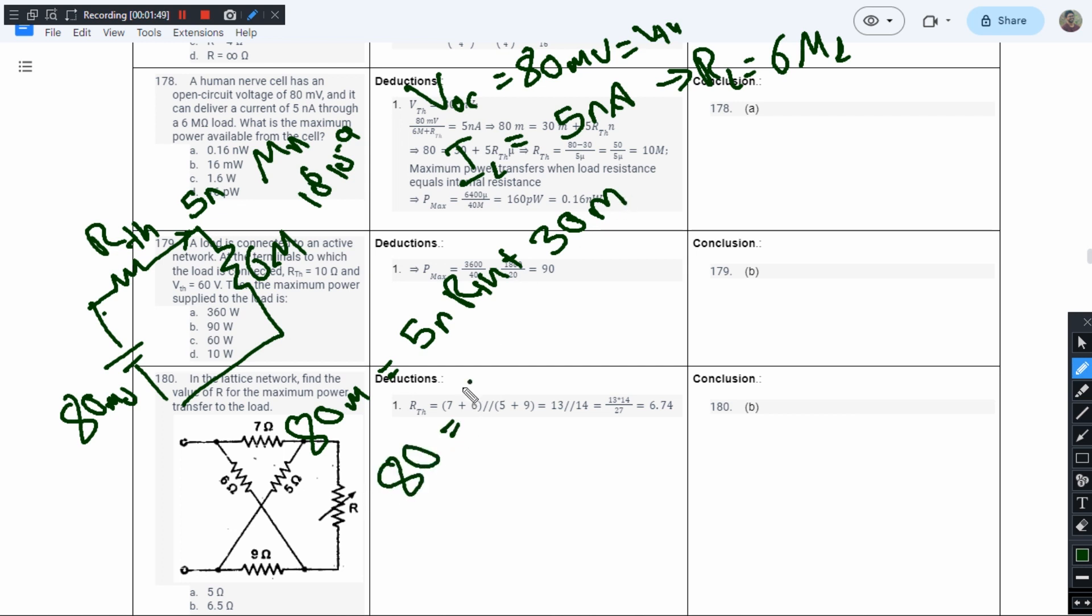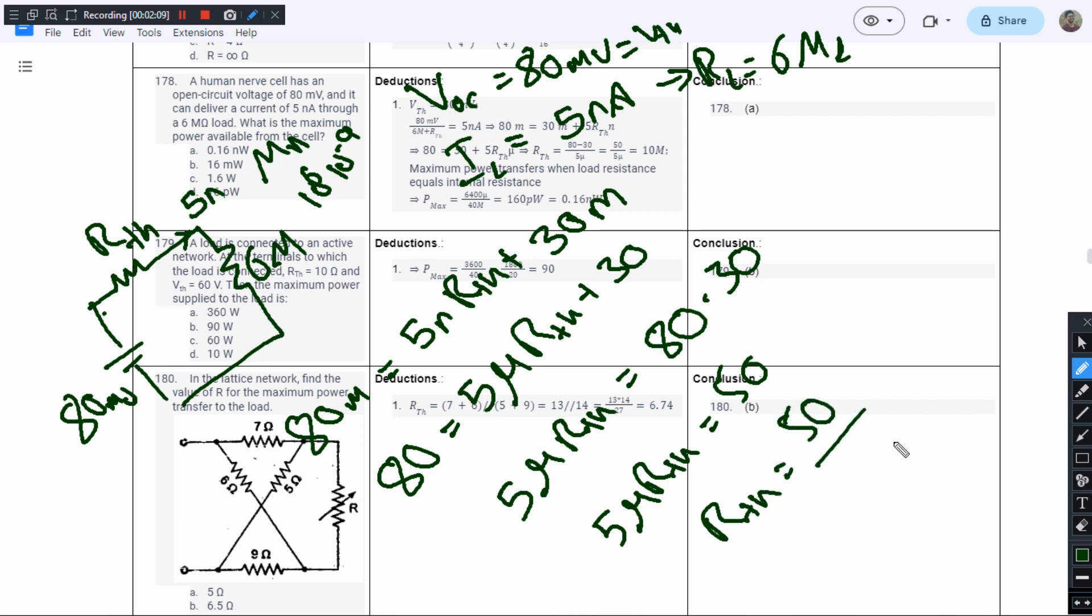Taking millivolts common from all terms: 80 equals 5 micro R_th plus 30. So 5 micro R_Thevenin equals 80 minus 30, which is 50. Therefore, R_Thevenin equals 50 divided by 5 micro. If we move micro to the numerator, it becomes mega.